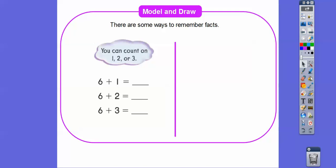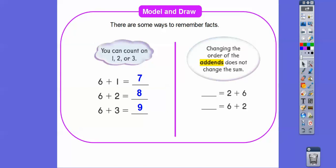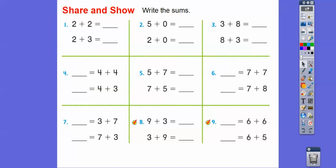So there's some ways to remember facts. We can count on one, two, or three. 6 + 1 = 7. 6 + 2 is one more than 6 + 1, which is 8. And then 6 + 3 is 6 + 2 + 1, which is 9 right there. So changing the order of the addends does not change the sum. So 2 + 6 is going to be the same as 6 + 2, and they're both 8 right there.